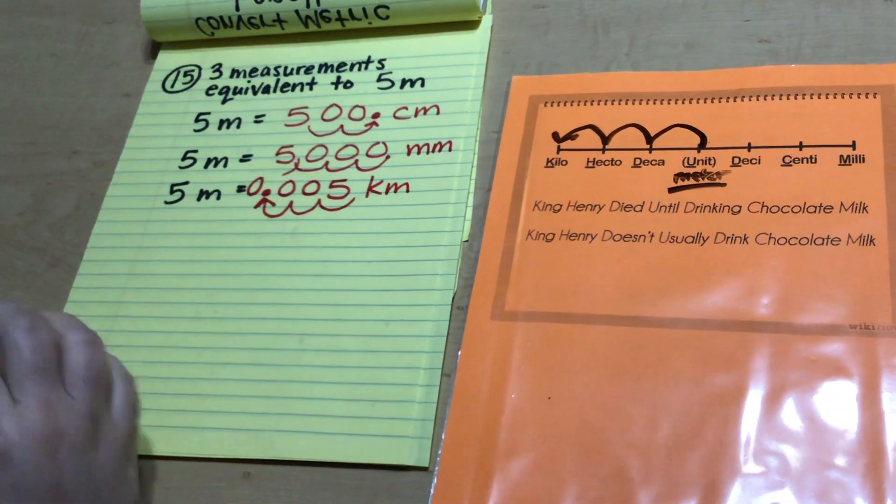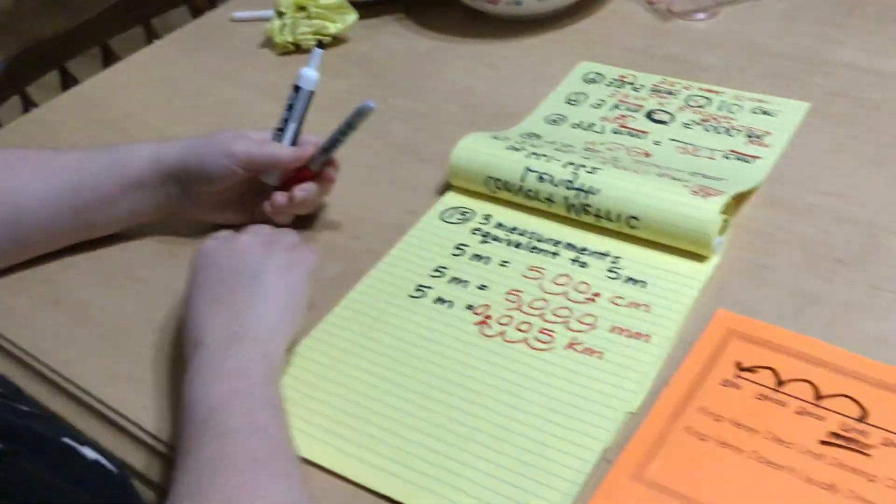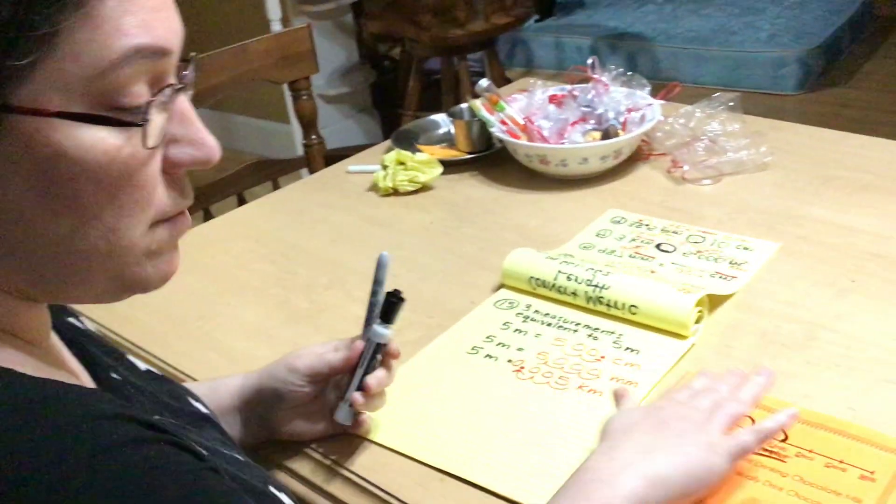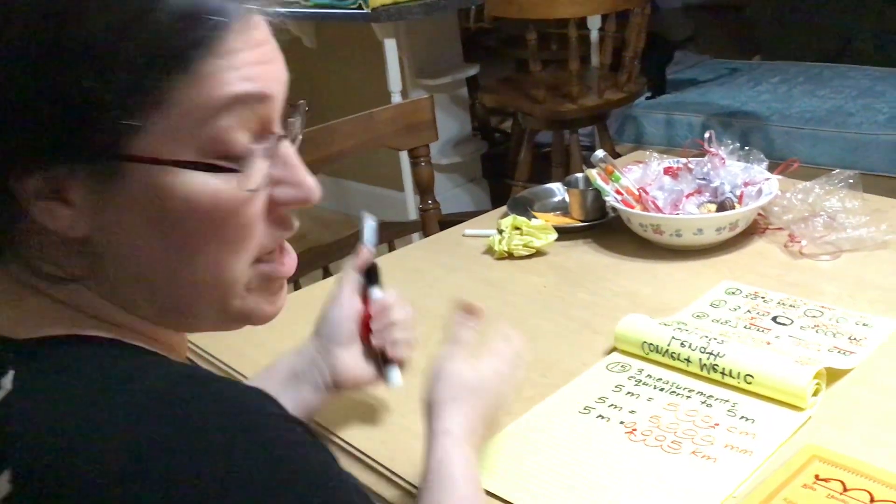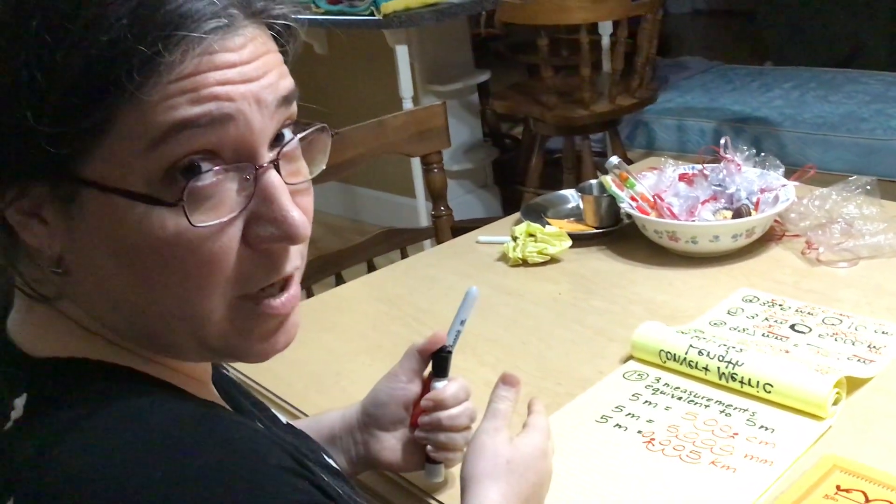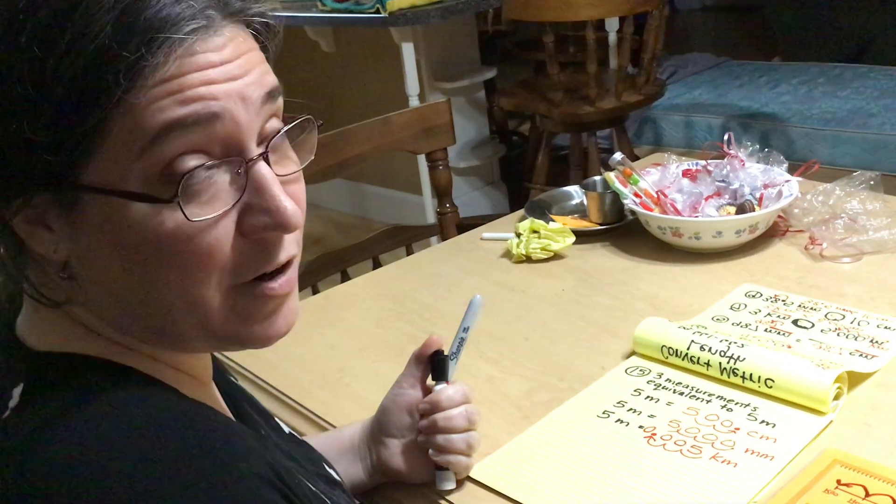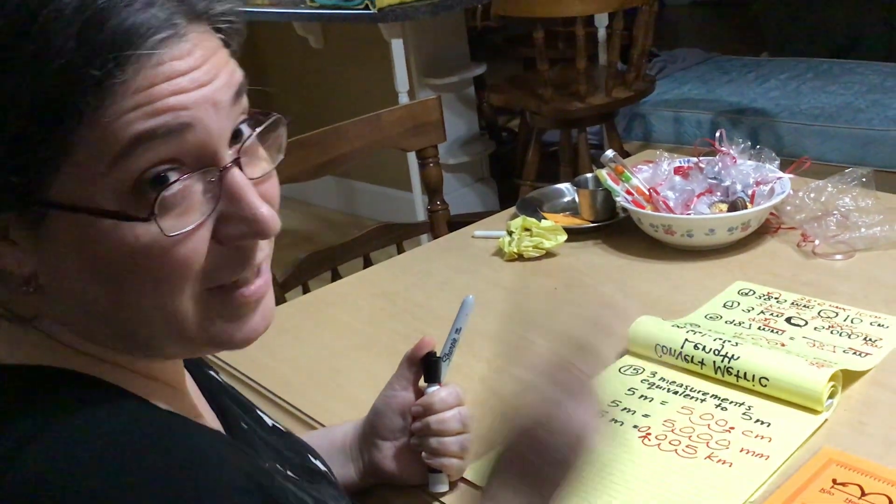This is really just about juggling around your decimal points. However many jumps you make in whatever direction you make on your chart, that's how many jumps and that's which direction you're going to make your jumps with your decimal point in your converted number. Good luck.